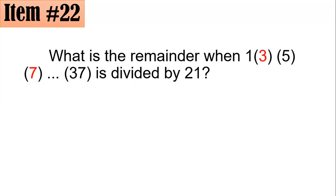So in this case, the problem is asking if you have 1 × 3 × 5 × 7 all the way until 37 is divided by 21, what is the remainder?